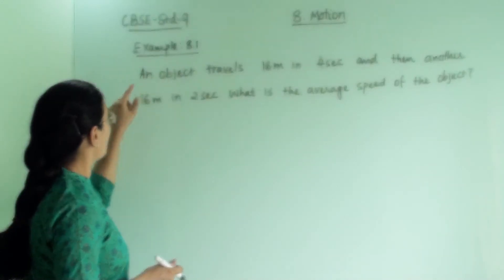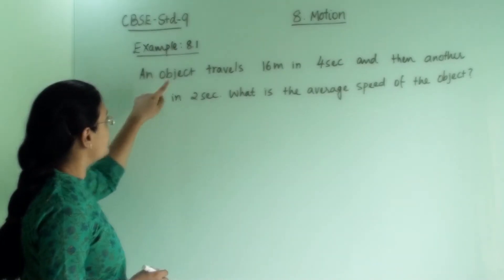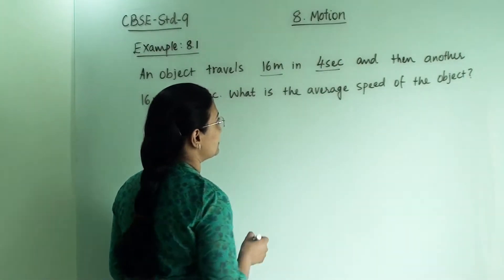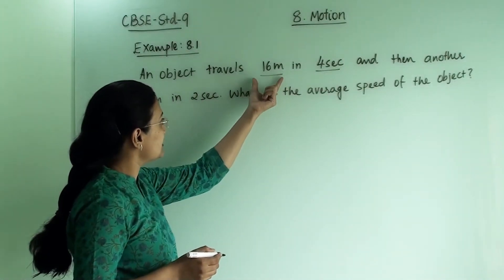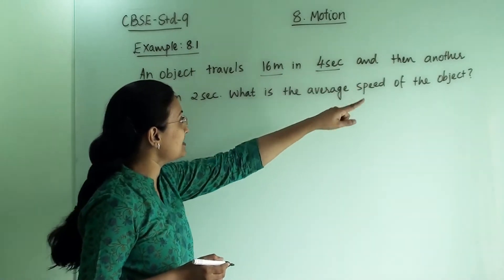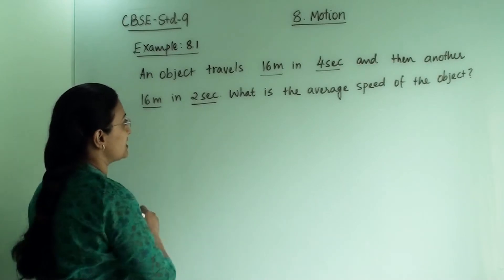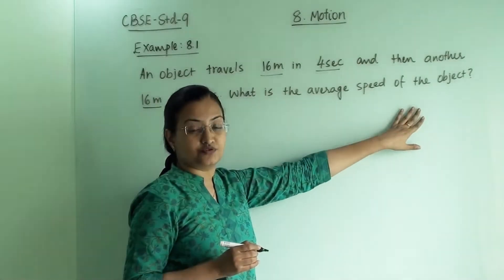Now let us understand this example 8.1. In that they have said that an object travels 16 meter in 4 seconds. So this is the first journey, that 16 meter in 4 seconds, and then another, this is 16 meter in 2 seconds. What is the average speed of the object?